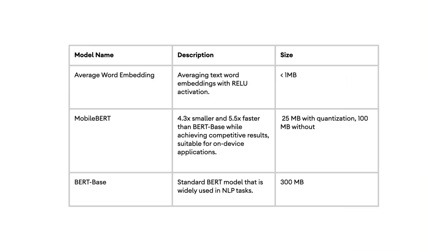Let's take a look at the models available for text classification. Looking at the Model Maker documentation, we find three text-based models. The key thing to note is that all of the model architectures shown essentially do the same job — it's just that some are more accurate or versatile than others. In fact, all of these can be used for comment spam detection. As web engineers, size is a big concern to us, so for that reason alone we can disregard the BERT base model, as it's simply too large for us to deploy to the client side.